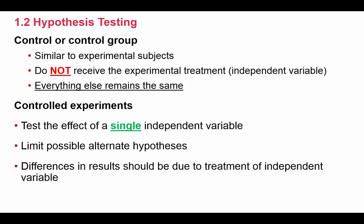Now, a second thing of a controlled experiment is you want to limit alternate hypotheses. You want your hypothesis that you're testing to be one that, at the end of the experiment, it's very easy to see if it was proven or disproven, but not because of other alternate hypotheses. And again, differences in the results should be due to treatment of the independent variable, not other things that you might possibly change.